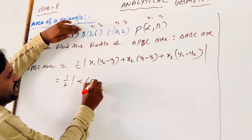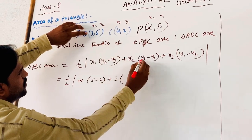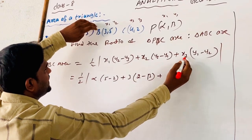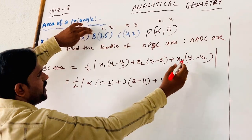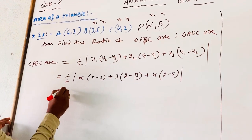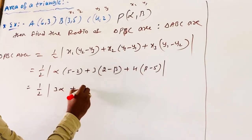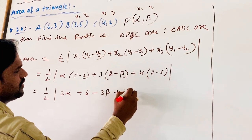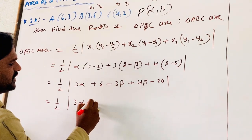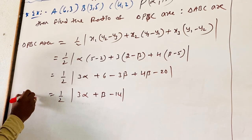Substituting: half into α(5 − 2) + 3(2 − β) + 4(β − 5). Simplifying: half into 3α + (6 − 3β) + (4β − 20), which gives half into modulus of 3α + β − 14. So this is the area of triangle PBC.